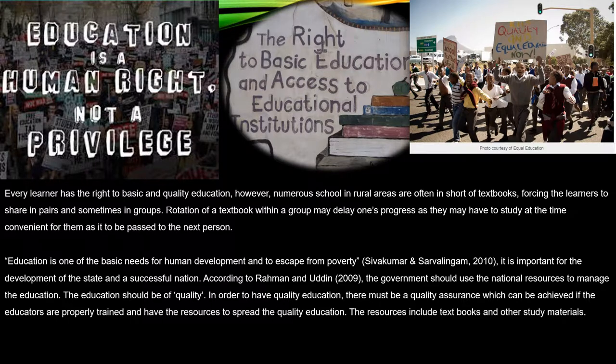Basic education is one of the constitutional rights in South Africa. Thus, every learner has the right to basic and quality education. However, numerous schools in rural areas are often short of textbooks, forcing learners to share in pairs and sometimes in groups. Rotation of a textbook within a group may delay one's progress as they may have to study at a time not convenient for them, as the book has to be passed to the next person.